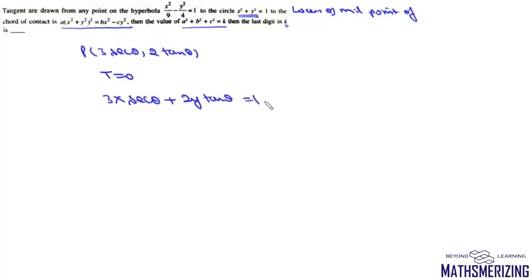Next question: tangents are drawn from any point on the hyperbola to the circle x² + y² = 1. The locus of the midpoint of chord of contact is ax² + by² ... Let the point on the hyperbola be P = (3 sec θ, 2 tan θ). From this point, tangents are drawn to the circle, and the equation of chord of contact is 3x sec θ + 2y tan θ = 1. We need to find the locus of the midpoint of this chord of contact.